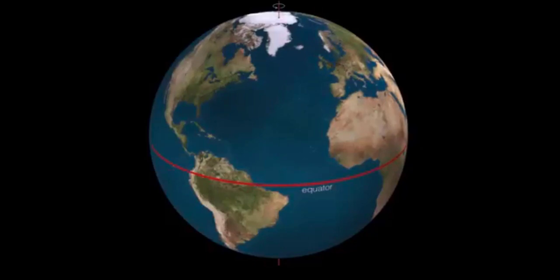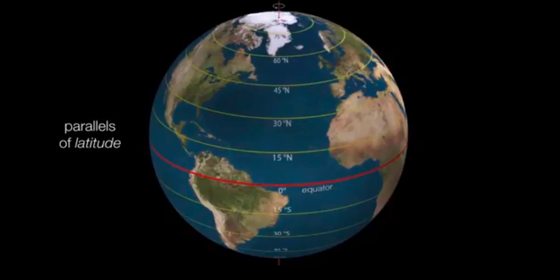And we can draw parallels to the equator. We define the equator as having zero degrees of latitude, going all the way up to 90 degrees north latitude at the North Pole, and define southern latitudes going all the way to 90 degrees south latitude at the South Pole.